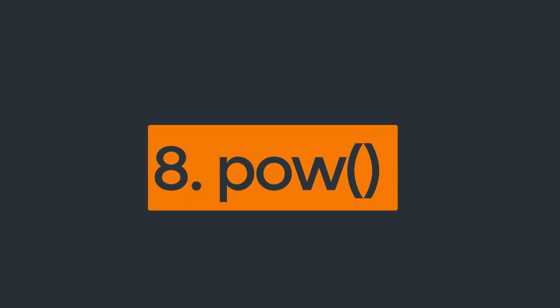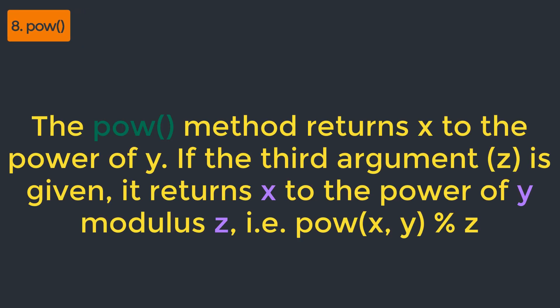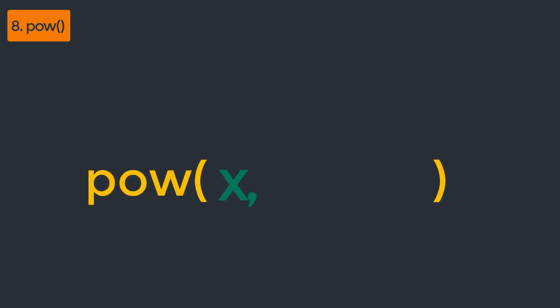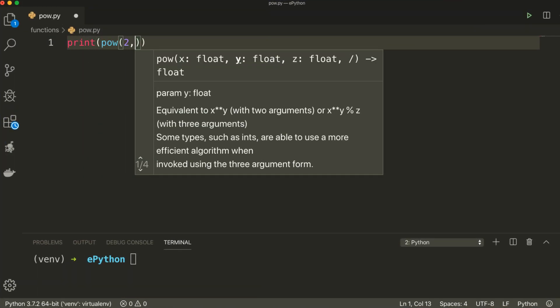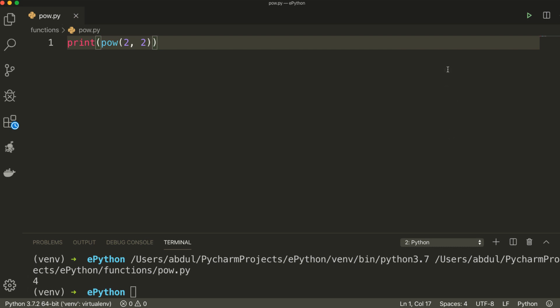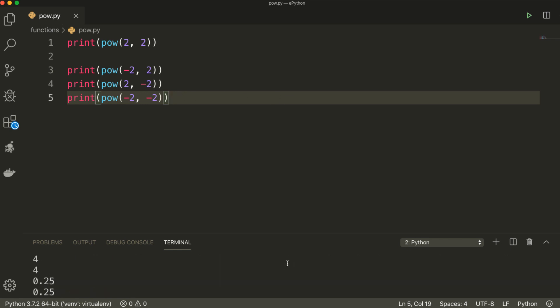Our next method is pow. The pow method returns x to the power of y. If the third argument z is given, it returns x to the power of y modulus z. This method takes three parameters: x — the number to be powered; y — the number which x is to be powered with; and z — an optional number used for the modulus operation. If we print pow(2, 2), it will print 4 because 2 to the power of 2 is 4. You can try this function with different values for x and y and see the results.